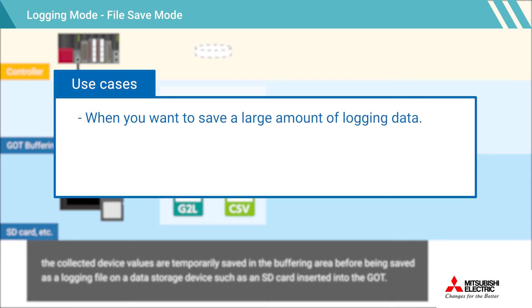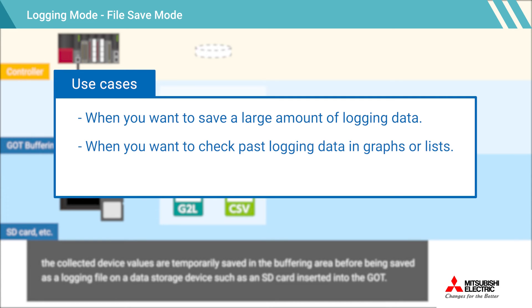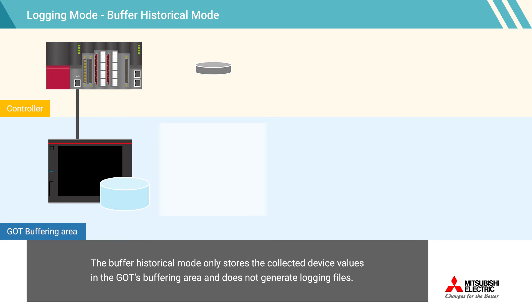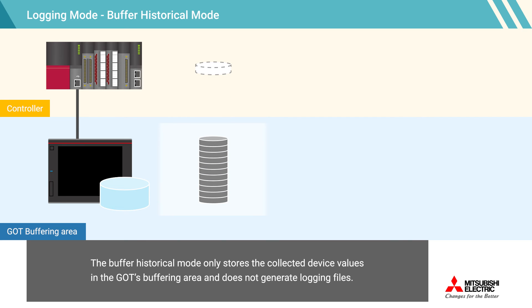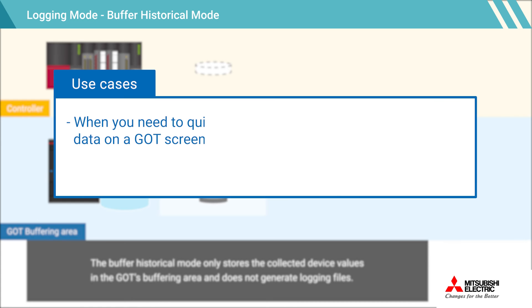File save mode is ideal for saving a large amount of logging data, viewing past logging data on a graph or list, or analyzing logging data on a PC. The buffer historical mode only stores the collected device values in the GOT's buffering area and does not generate logging files. Since it does not generate logging files, it is a suitable choice when you want to show a graph or list of the logging data quickly, or when you do not need to store a large amount of logging data.